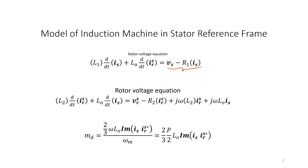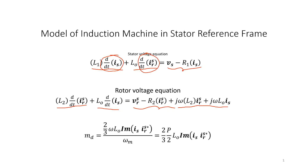And this signal is Vr minus R2·Ir plus j·omega·L2·Ir plus L0·Is. So now we have Vs minus R1·Is and Vr minus R2·Ir plus j·omega·L2·Ir plus j·omega·L0·Is. That is nothing but L1·d/dt of Is plus L0·d/dt of Ir, and L2·dIr/dt plus L0·d/dt of Is. We have to find out d/dt of Is and d/dt of Ir because Is and Ir are the states of the machine.